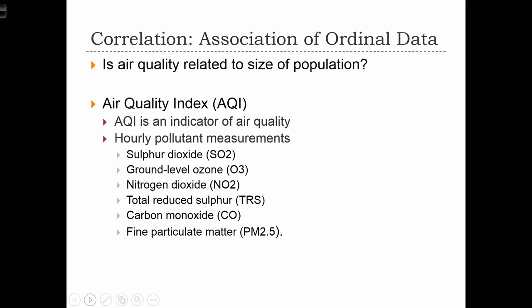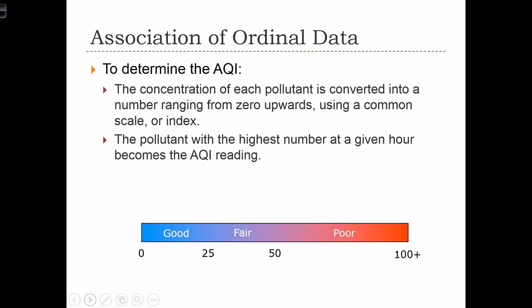In this example we're going to apply correlation statistics to a data set of cities and an air quality index variable. This is just an indicator of air quality that's a measurement of the amount of pollutants in the air. And this is just a ranking scheme between 0 and 100, where 0 means good air quality and 100 means poor.